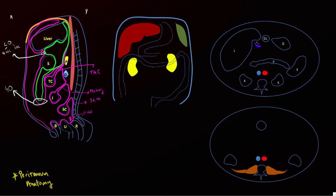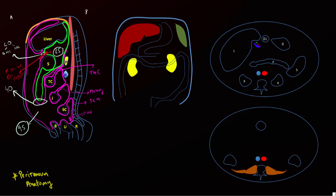All these peritoneal linings and ligaments split the abdominal cavity into two components. The first is the greater sac, which encompasses the majority of the abdominal cavity including the pouch of Douglas. The second is the lesser sac, which communicates with the greater sac via the foramen of Winslow, also known as the epiploic foramen. Finally, there is a bare area of the liver — a region not surrounded by peritoneum — where ascites fluid will not accumulate.